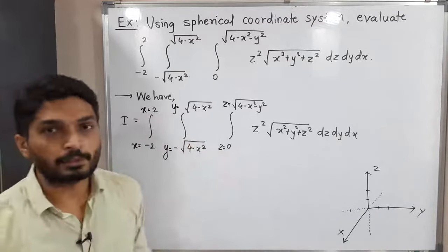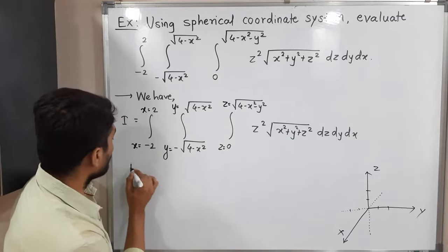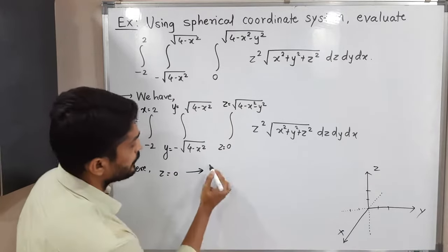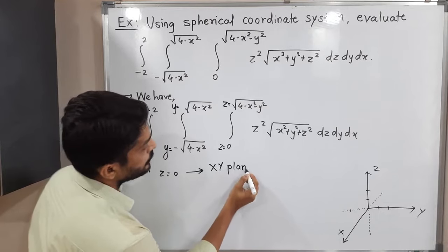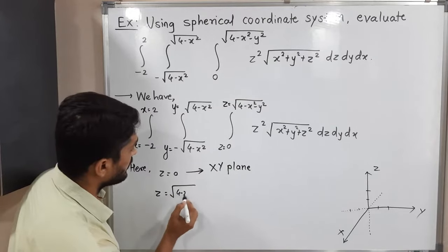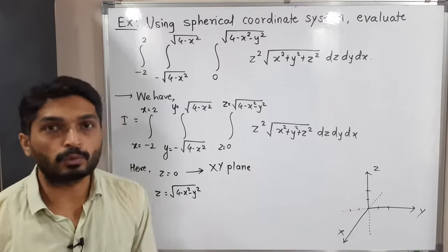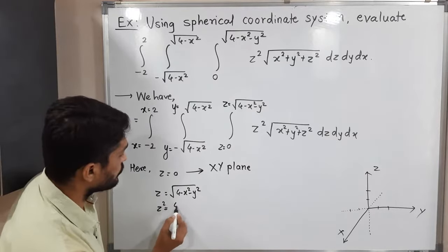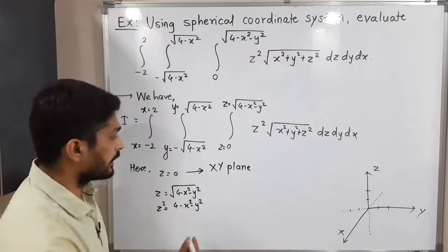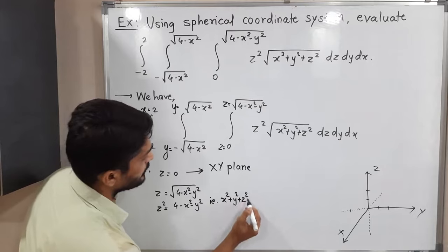Let us consider these equations one by one and we will try to find the region of integration. Here Z is equal to zero, which is the equation of the XY plane, so the region is bounded by the XY plane. The second equation is Z equal to square root of four minus X squared minus Y squared. To remove the square root, I will take the square of both sides, giving Z squared equal to four minus X squared minus Y squared. Taking all variables to one side: X squared plus Y squared plus Z squared equals four.